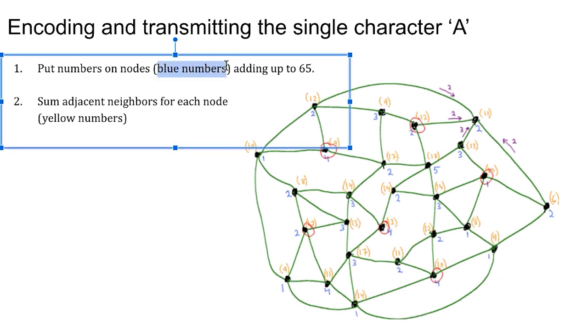So the blue numbers on the graph all add up to 65. So there's a 2 there, a 3, a 2, a 5, a 1, and all those blue numbers, they add up to 65. So once the blue numbers are on there, then we do a little bit more computation to get the yellow numbers. The yellow numbers represent all the ones that are reachable from a particular node.